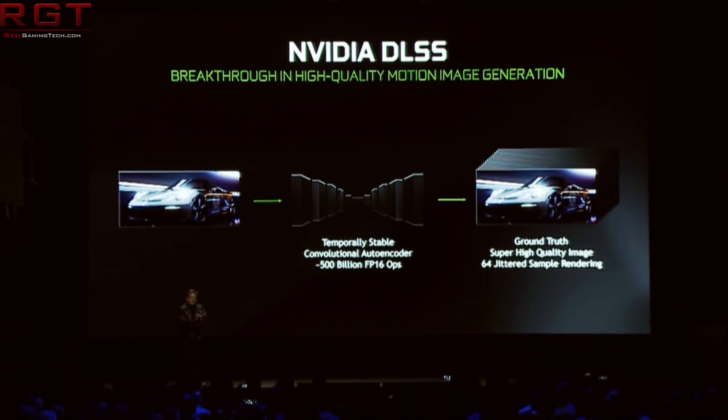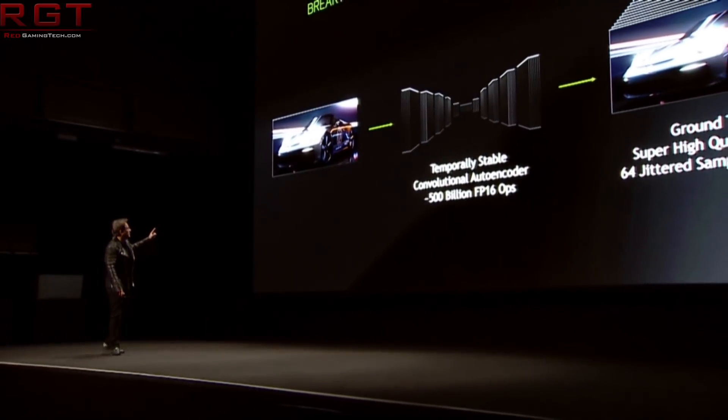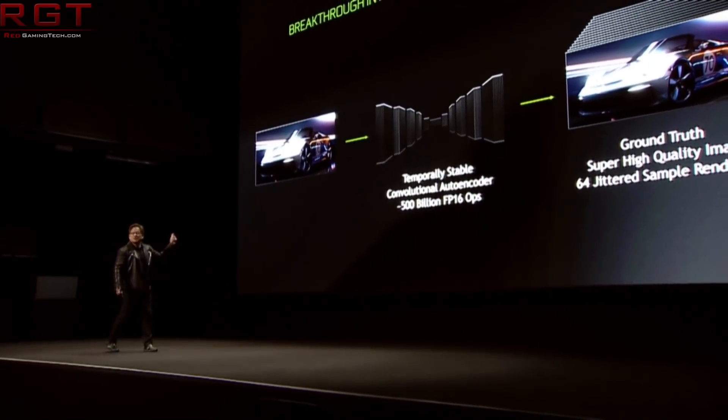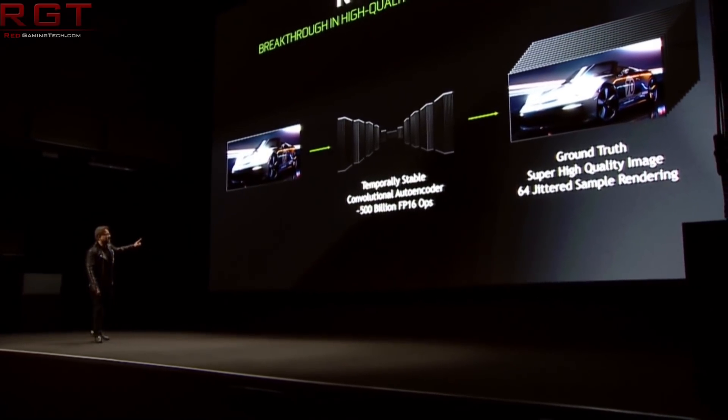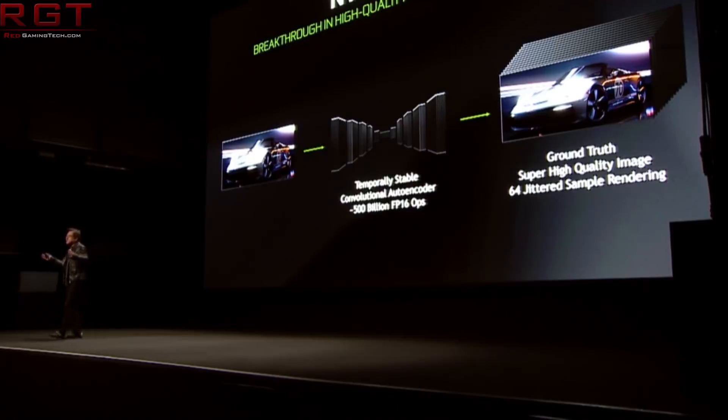Originally it was unveiled that developers would need to provide samples of the game code to Nvidia, who would then use their internal high-end GPUs to do the calculations. You would then be able to download a few megabytes depending on the game, enabling DLSS support. However, there is also a way for developers to create their own custom algorithms running natively on the tensor cores, rather than submitting code to Nvidia.